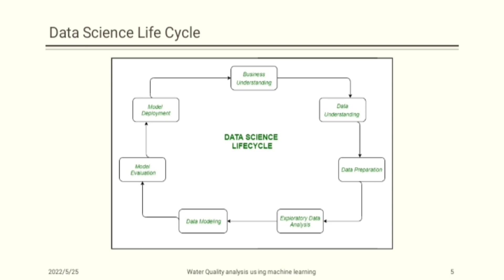Data Modeling is the process of creating a data model for an information system by applying certain formal techniques. Model Evaluation is the process of using different evaluations to understand machine learning model performance. And the last one is Model Deployment, which is an iterative process in which many models are derived.